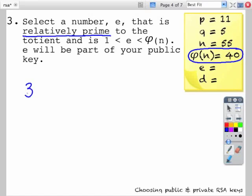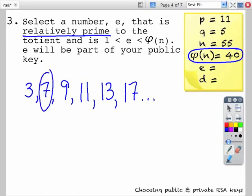And so for our totient, 3 would be relatively prime, 7, 9, 11, 13, 17. I could go on but that would take up a great deal of space. And so for this example I'm going to pick 7 as e because it is relatively prime and it's a small number and it's easy to calculate.